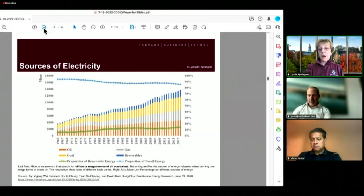this graph actually looks at the difference between oil, coal, gas, coal is in yellow, oil is in orange, gas is in gray, renewables are in blue,